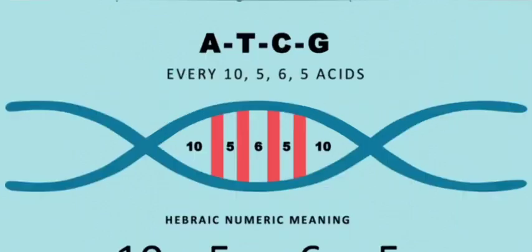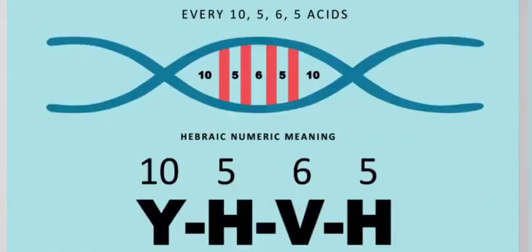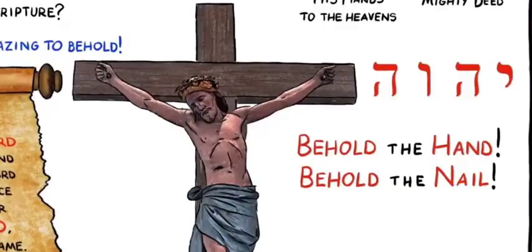And that also is comparable in the same number pattern as Yahweh, 10-5-6-5, the name of God. And what is the name of God and what does it mean? Well, when you take the translation of these words, it means 'Behold the hand, behold the nail.'